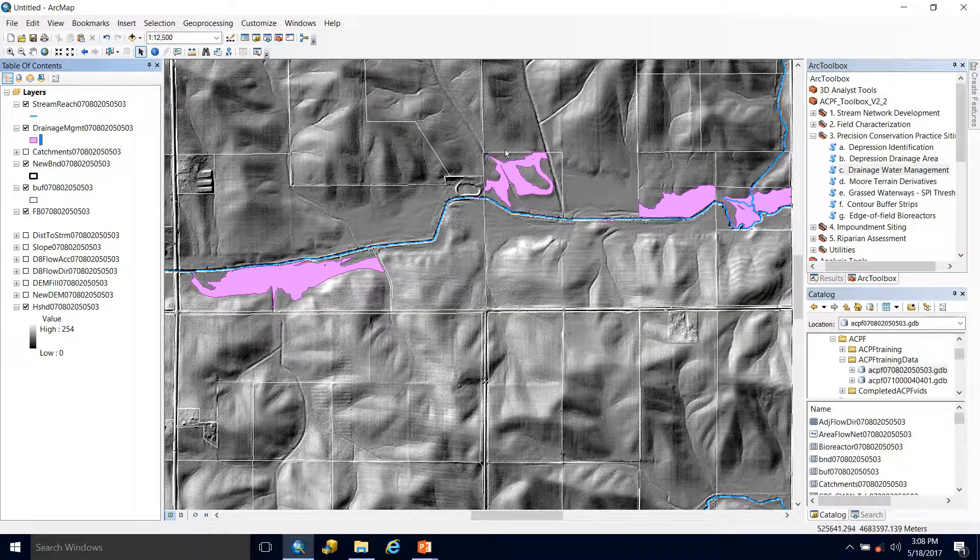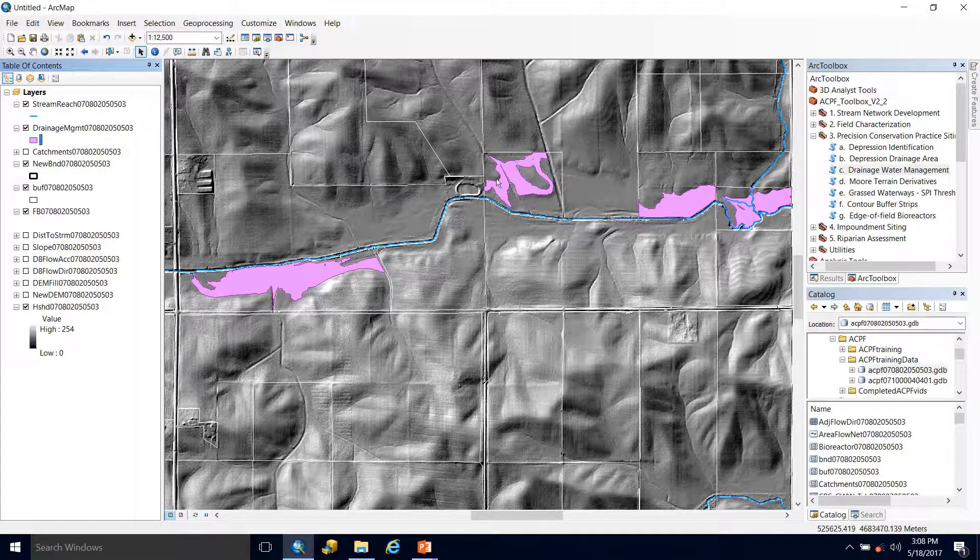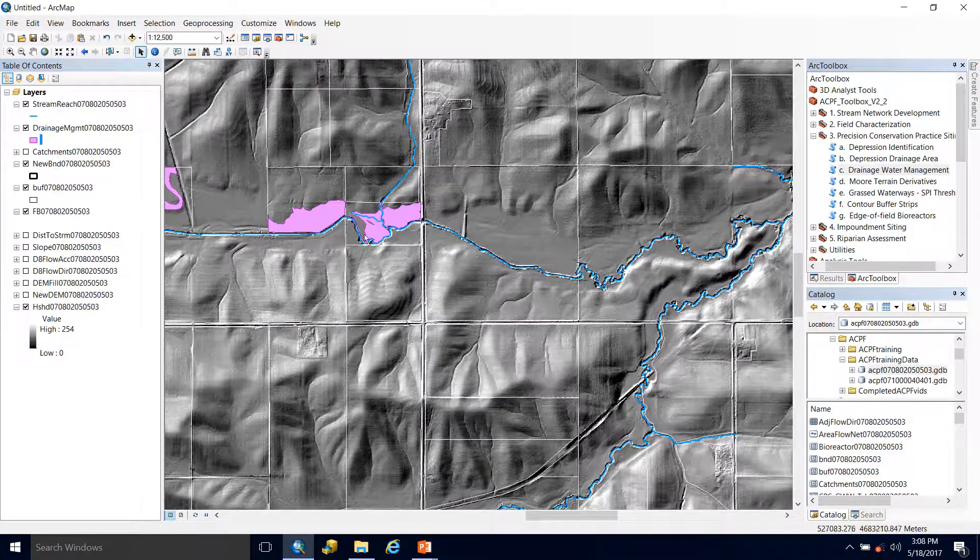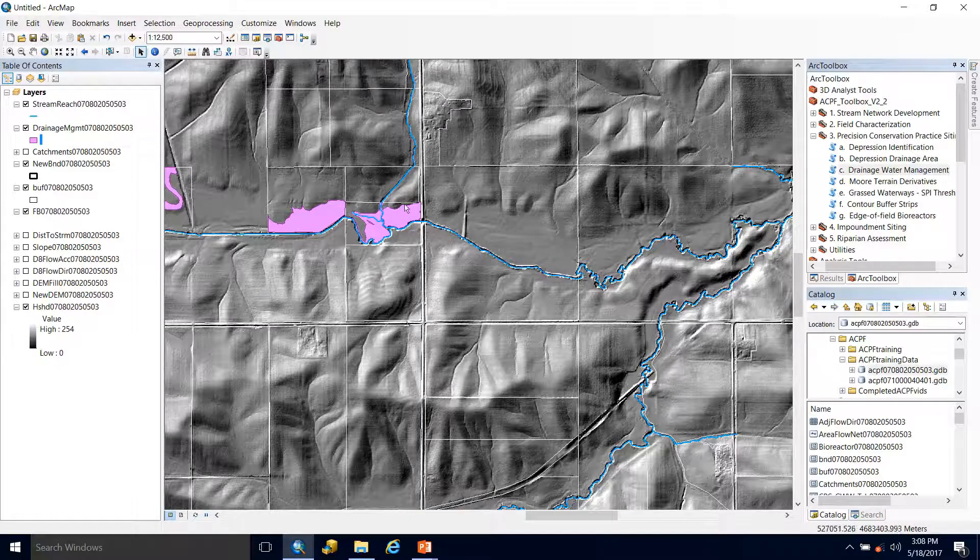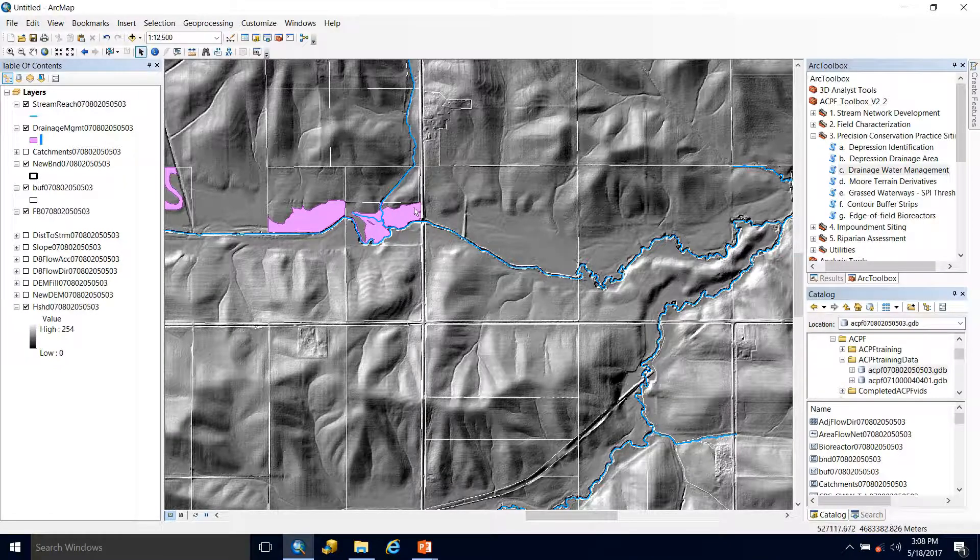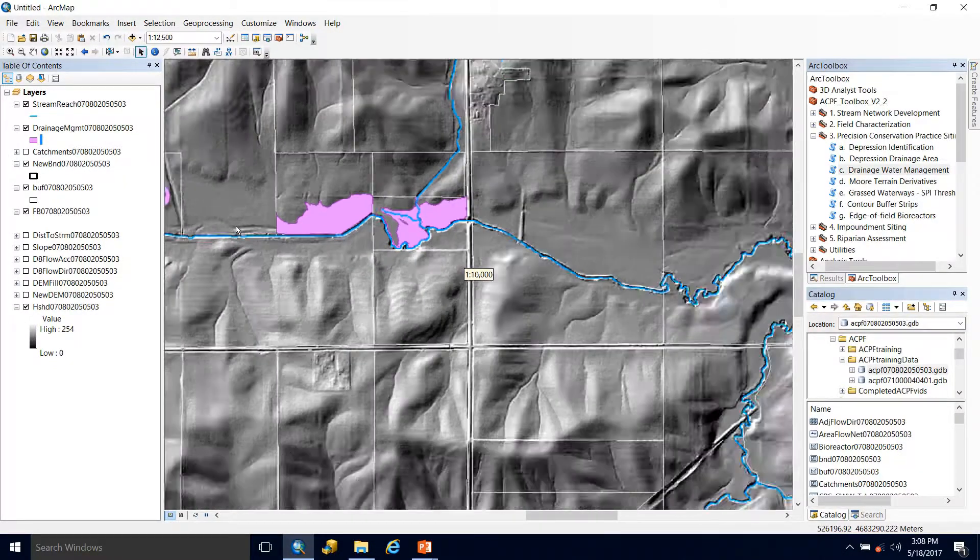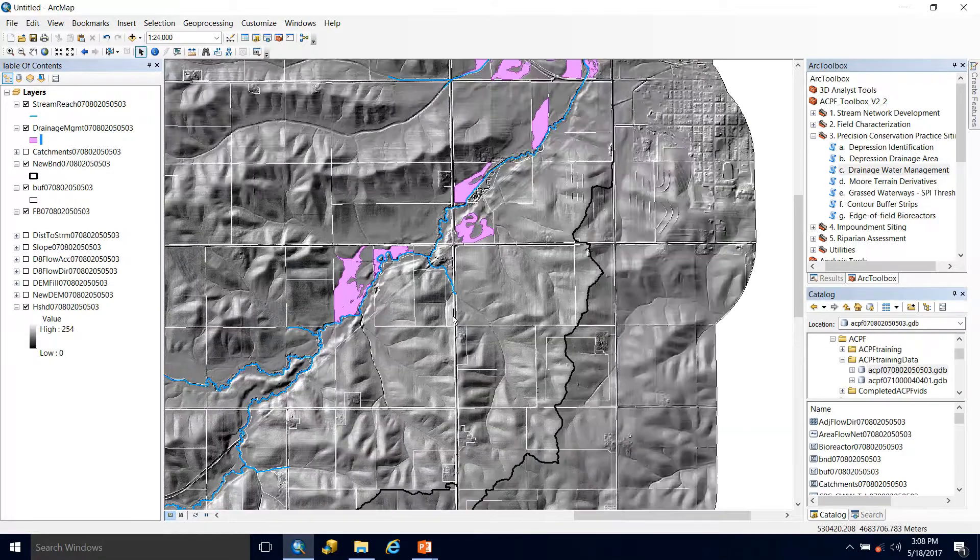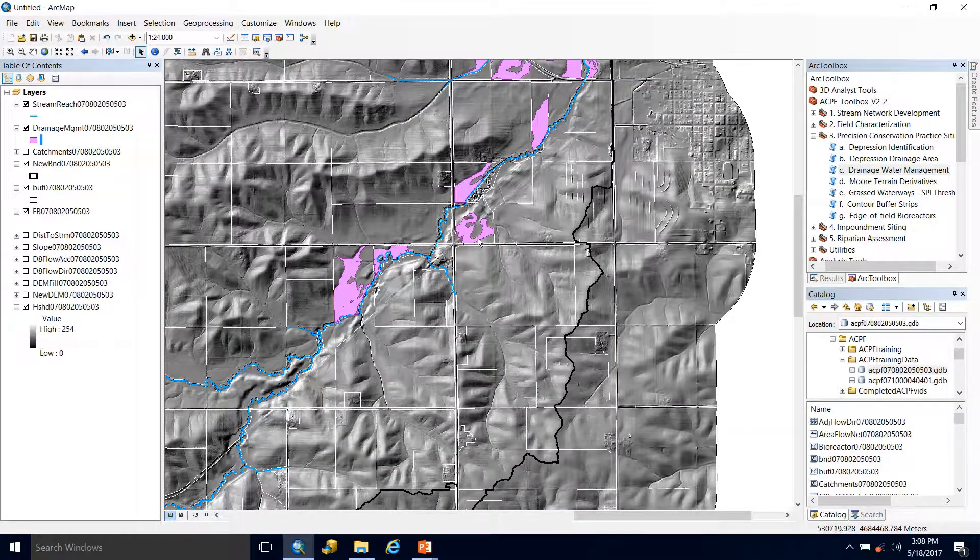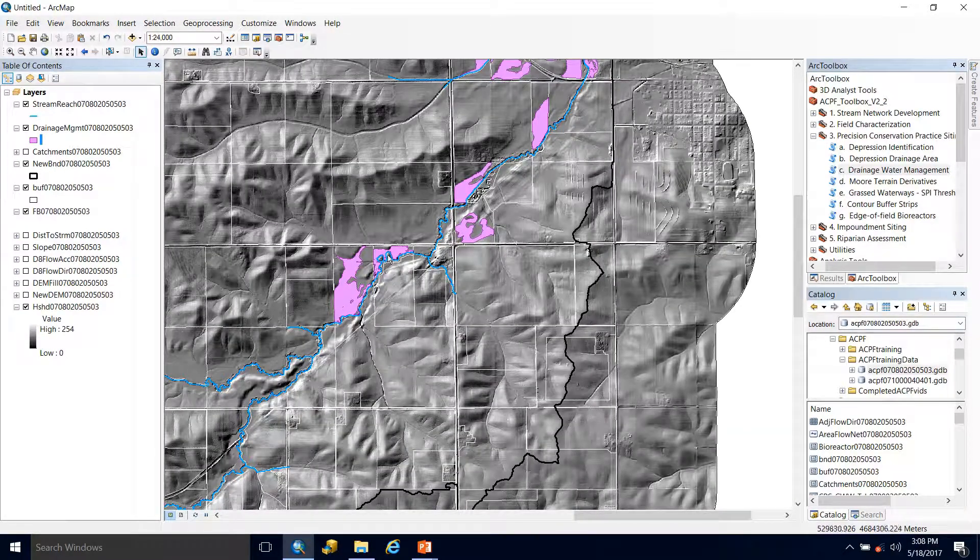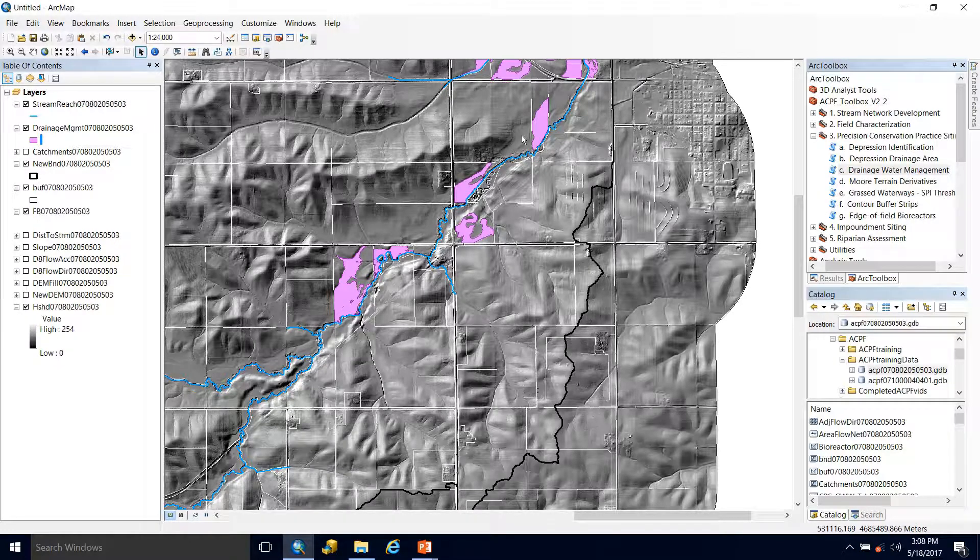Now within a single field, what sort of portion of it could be treated by this practice? You can see, for instance, this field, a majority of it does get treated. And it's no surprise that most of these opportunities within this watershed are very close to the stream just because that's where the floodplain would be located and that floodplains are typically flatter areas.